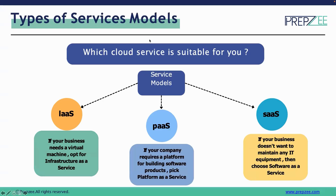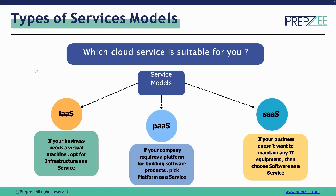Moving on to the service models, we have three main ones: Infrastructure as a Service, Platform as a Service, and Software as a Service. Infrastructure as a Service is similar to buying a PC completely — we only get the infrastructure with no OS included. Just like when we buy a PC, we only get the hardware components and have to take care of the operating system along with any other application deployment ourselves. That is what we refer to as the Infrastructure as a Service model.